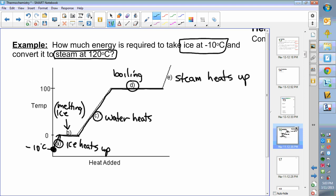You have five different sections that you need to work out: where ice heats up, then ice melts, water heats up, water boils, and steam heats up. When you're dealing with ice heats up, that is a q equals mc delta t formula.